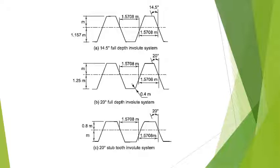When the number of teeth on the gear approaches infinity, or when the pitch circle radius approaches infinity, the teeth become a rack with straight sides. For the 14.5 degree involute system, the basic rack is composed of straight sides. In this system, the phenomenon of interference occurs when the number of teeth on the pinion becomes less than 32. Interference is a phenomenon of tooth profiles overlapping and cutting into each other, which is not desired.